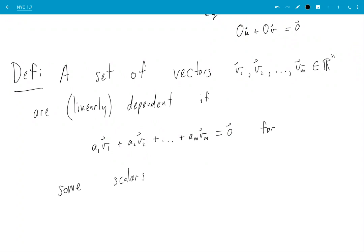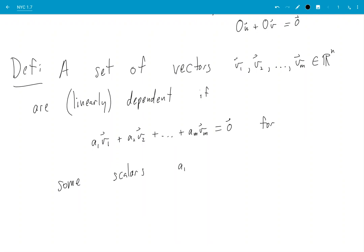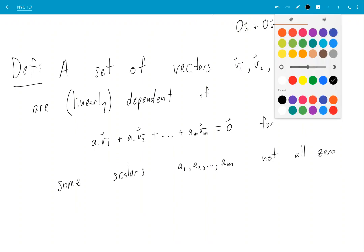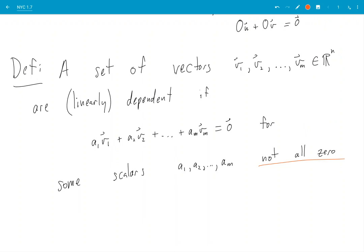And the stipulation is that a1, a2... these numbers cannot all be zero. Not all zero.